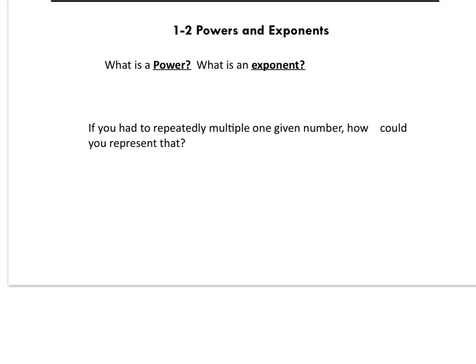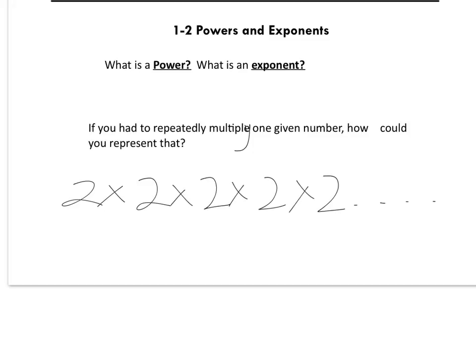If you had to repeatedly multiply one given number, how could you represent that? For example, if you had to multiply two times two times two times two a whole bunch of times — say, 60 times — what would be a better way to do that? Remembering that multiplication is used to show repeated addition, just as division shows repeated subtraction, what would be a way to show repeated multiplication? Take a moment to tell yourself what you already know.